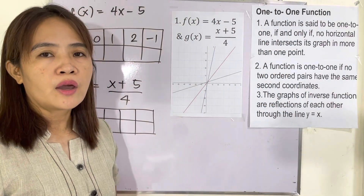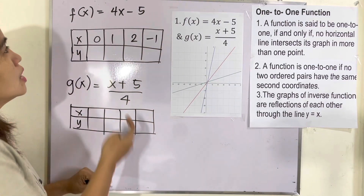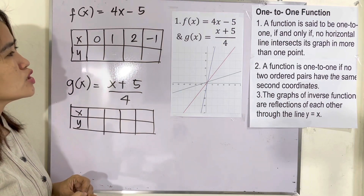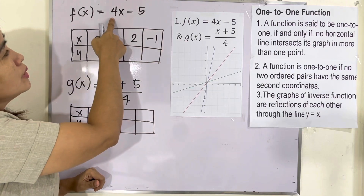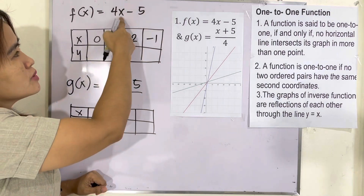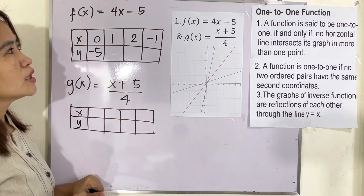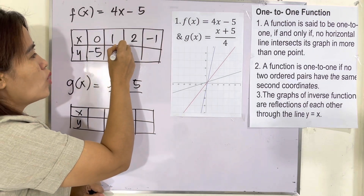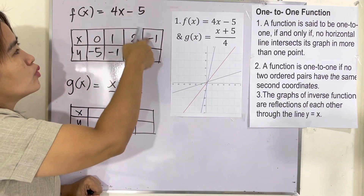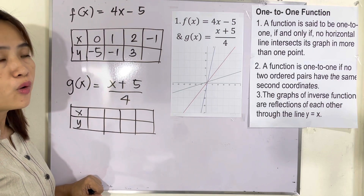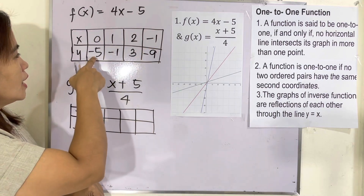Let us now verify whether they are really inverses by using a table of values. For f(x) = 4x − 5, I assign values for x. If x = 0: 4(0) − 5 = −5. If x = 1: 4(1) − 5 = −1. If x = 2: 4(2) − 5 = 3. If x = −1: 4(−1) − 5 = −9.